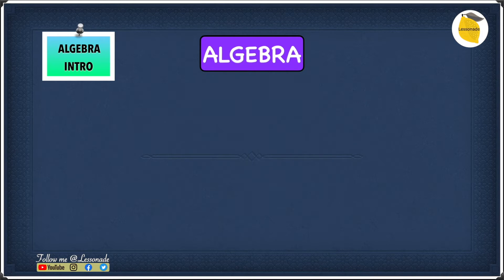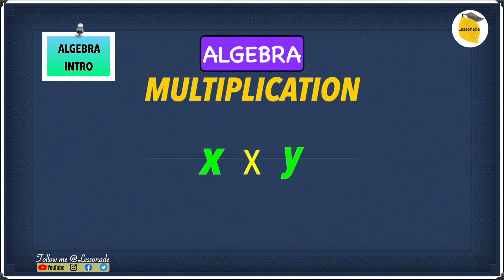So now, we can move into multiplication. So multiplication, we have x times y. And you might wonder why x times y is different to arithmetic.